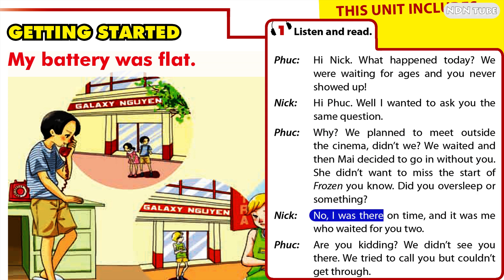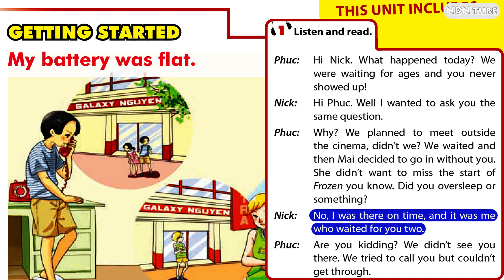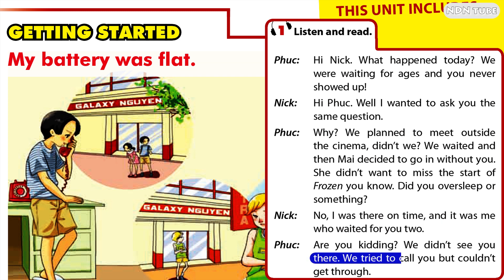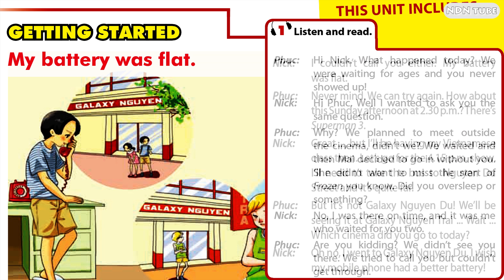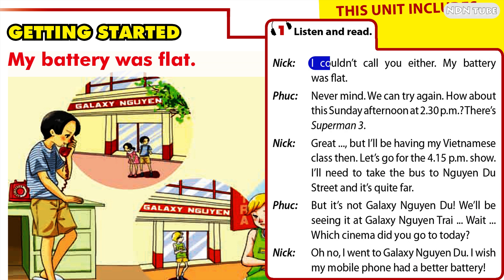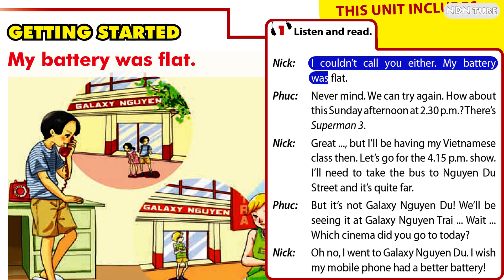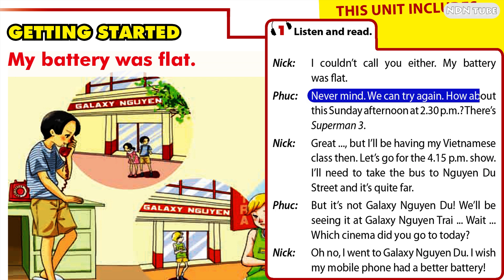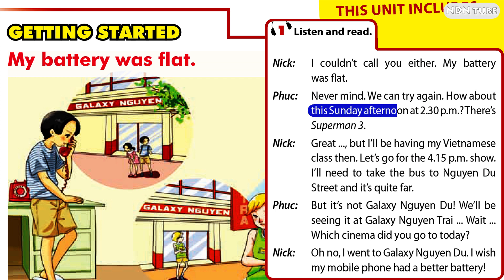No, I was there on time and it was me who waited for you two. Are you kidding? We didn't see you there. We tried to call you but couldn't get through. I couldn't call you either. My battery was flat. Never mind, we can try again. How about this Sunday afternoon at 2.30pm?